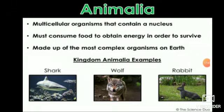Kingdom Animalia consists of all multicellular organisms that contain a nucleus and must consume food to obtain energy to survive. All animals are heterotrophs — they rely on autotrophs and other heterotrophs for their food. They are made up of the most complex organisms on earth, with a higher level of organization. Examples include shark, wolf, and rabbit.